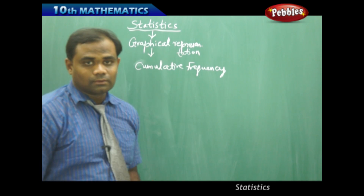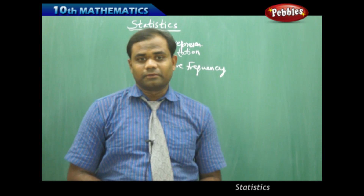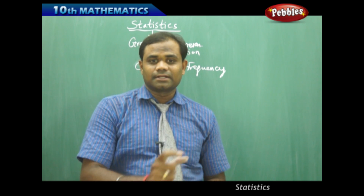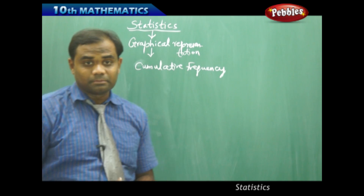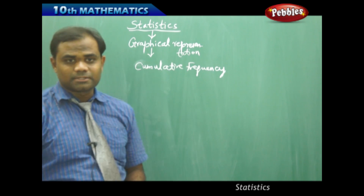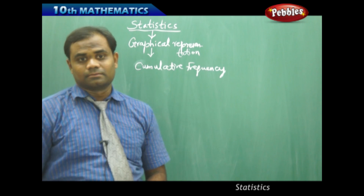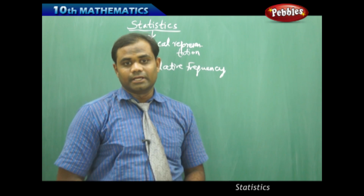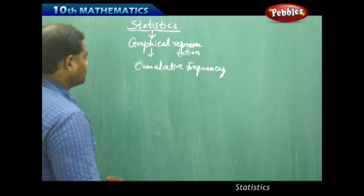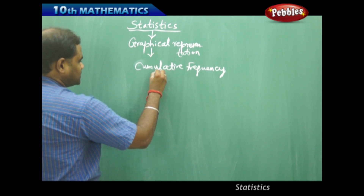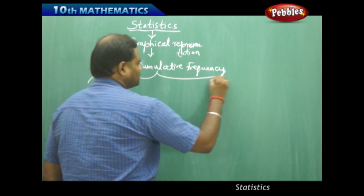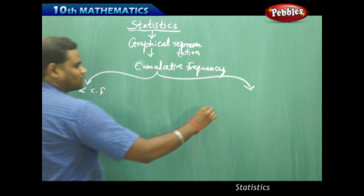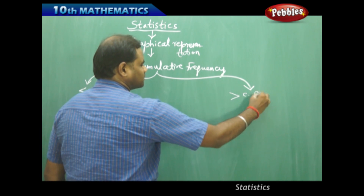Now let's see how we can connect the cumulative frequency with graphs. We have discussed about cumulative frequency — the less than and the greater than cumulative frequency connected with median. Let's see how we can graphically represent the cumulative frequency, which helps in predicting situations through graphs. We have two types of cumulative frequencies: less than cumulative frequency and greater than cumulative frequency.